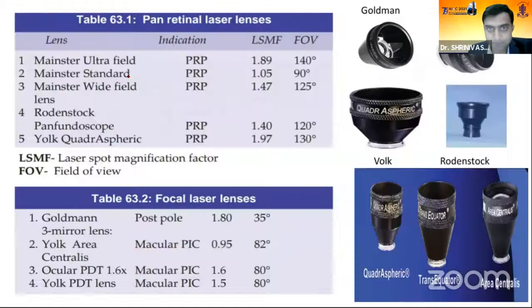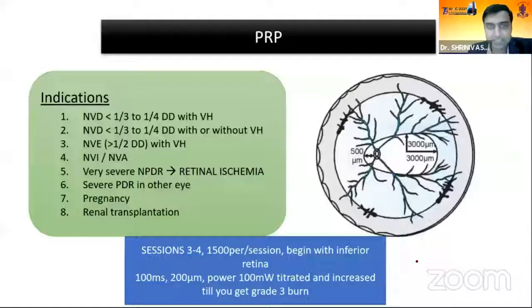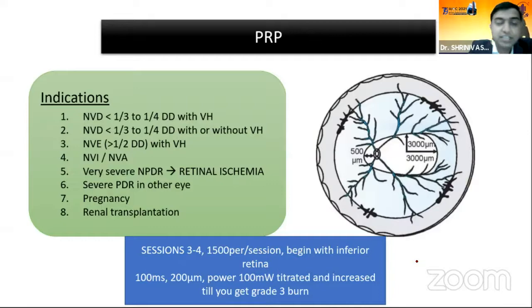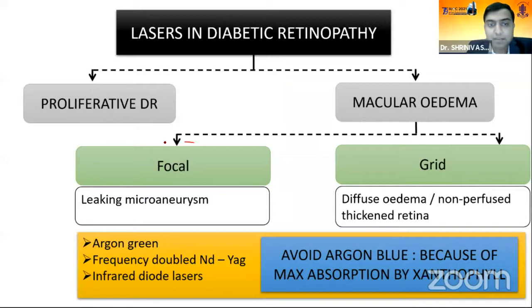Various lenses are used; commonly the quadraspheric lens from Volk and the Mainster lens. For focal lasers, quadraspheric, trans-equator, and area centralis lenses are used. Indications can be treated in one, two, or three sessions depending on surgeon's choice. We use it in proliferative diabetic retinopathy and even in very severe NPDR leading to retinal ischemia. For diabetic retinopathy, focal laser treats leaking microaneurysms, while grid laser is used for diffuse edema in non-perfused, thickened retina.